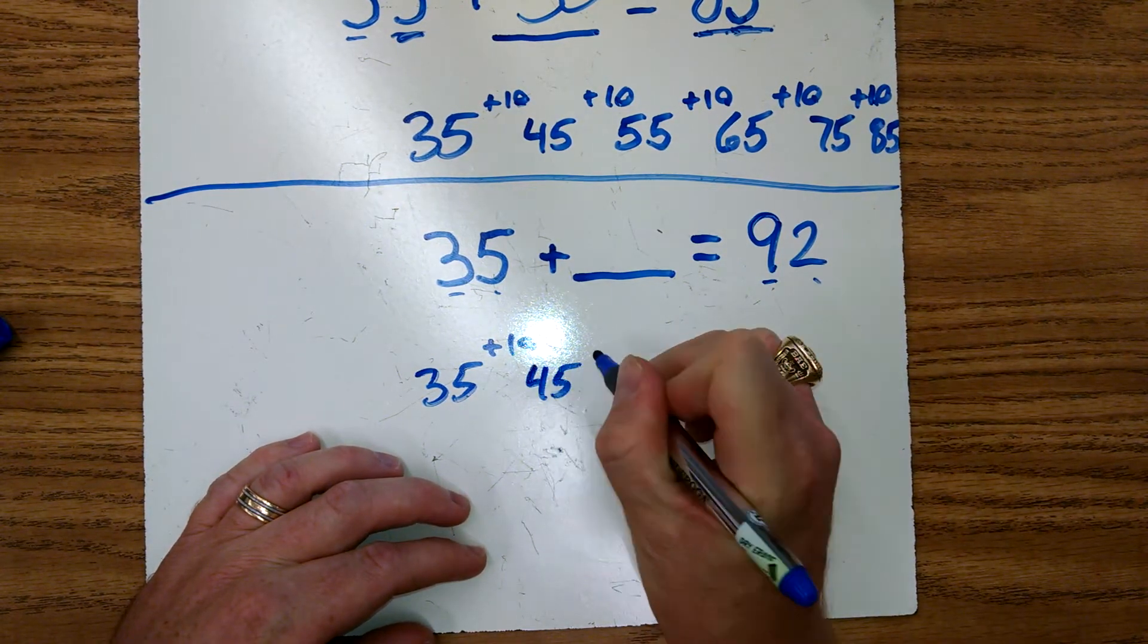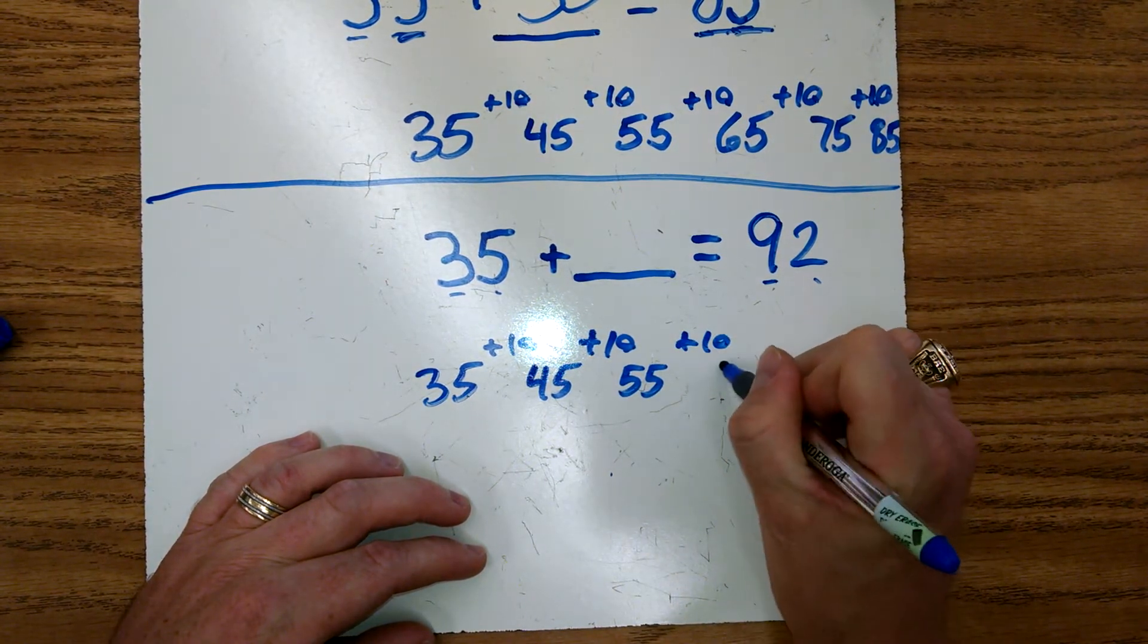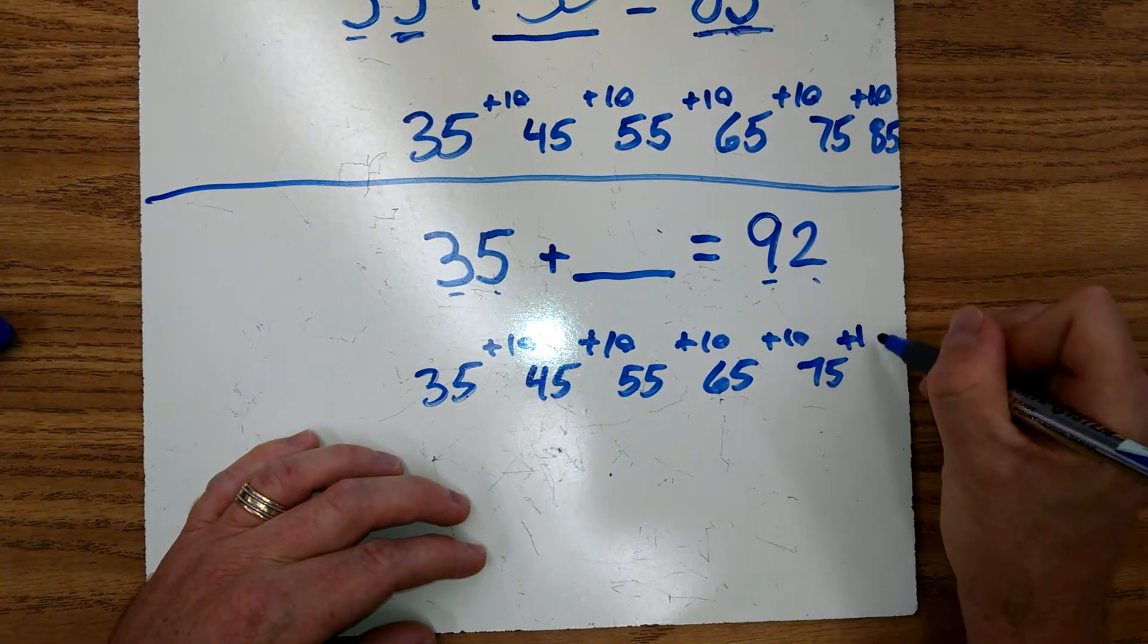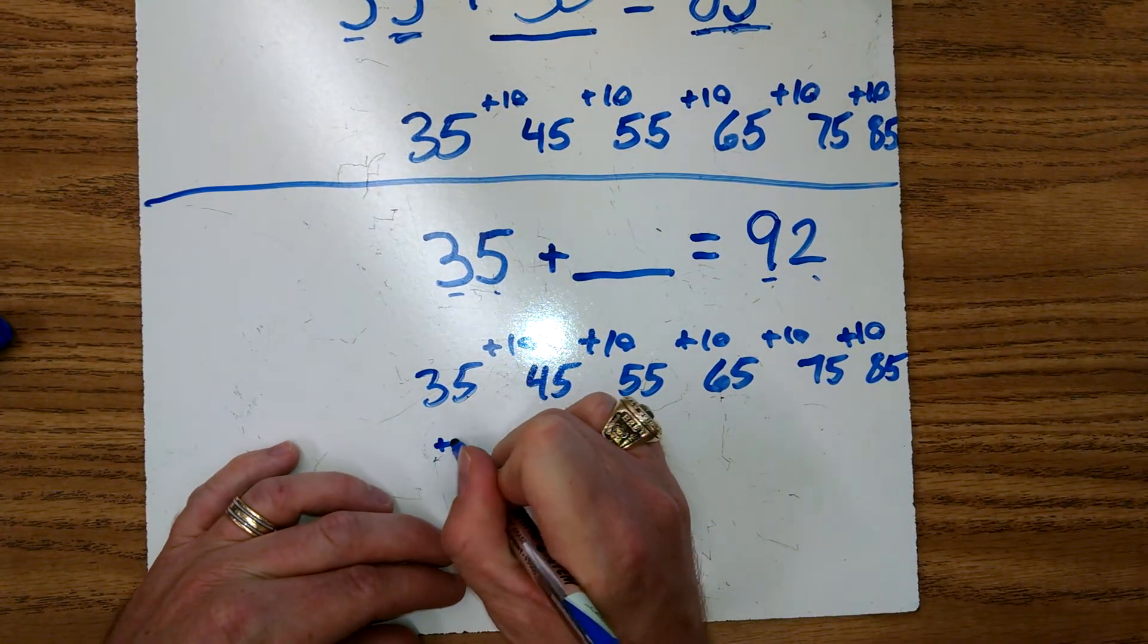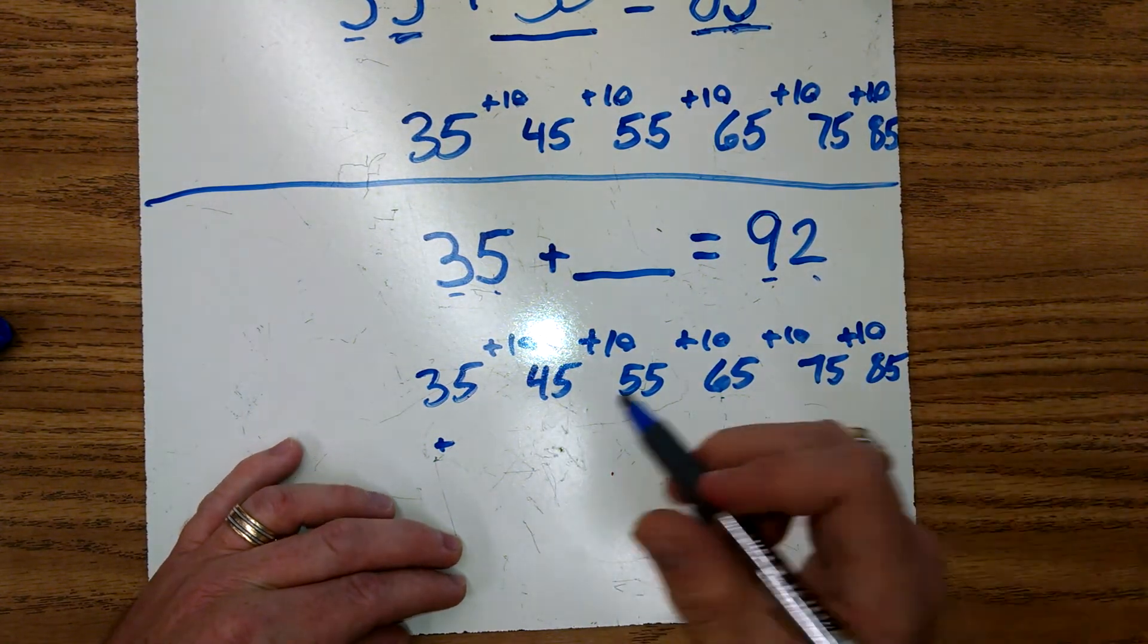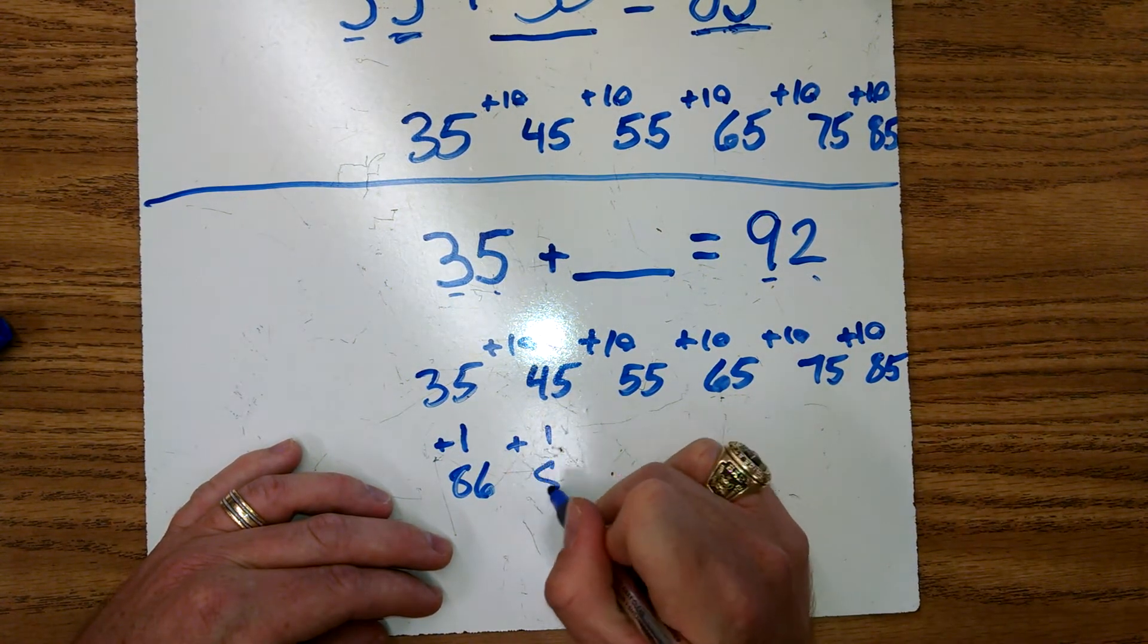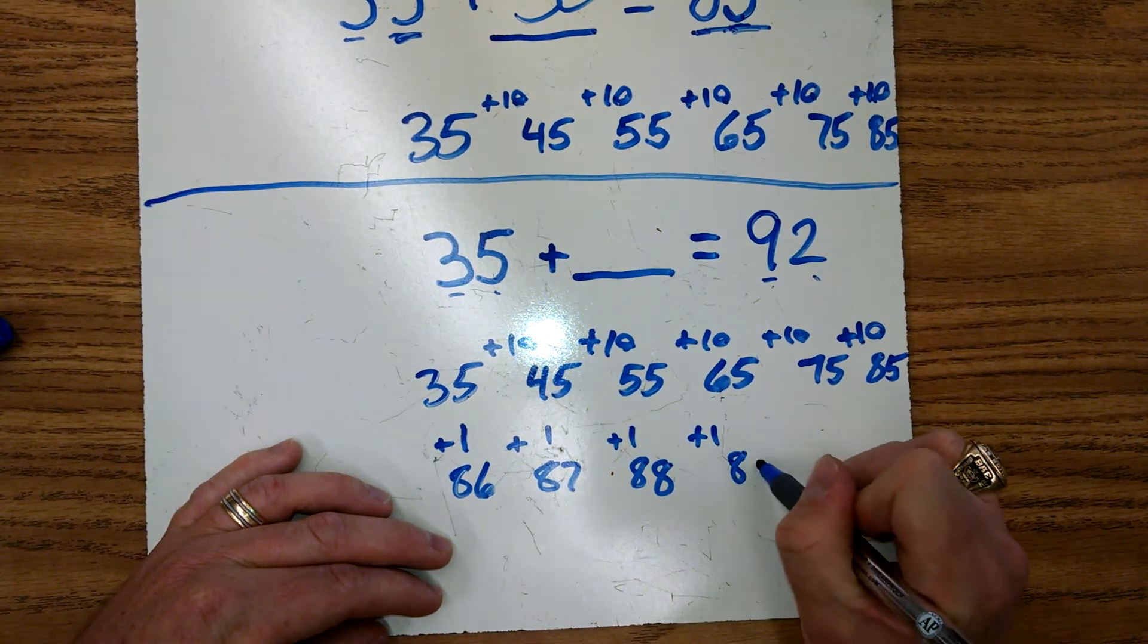35, 45, 55, 65, 75, we're getting a little close, 85. Now if we do 10 more we're going to get to 95, so we don't want to go over, so let's just start counting ones: 85, 86, 87, 88, 89, 90, 91, 92, and there we are at 92.